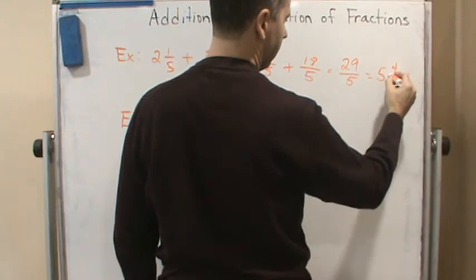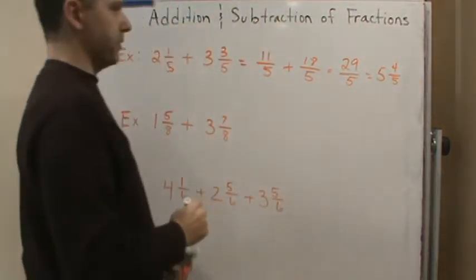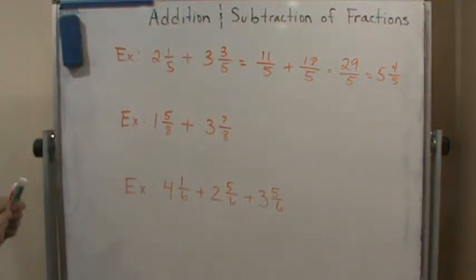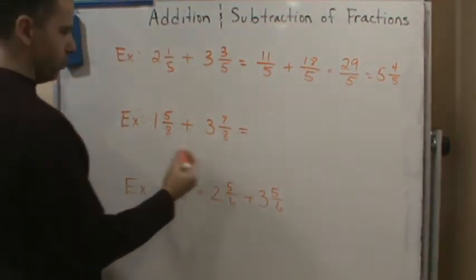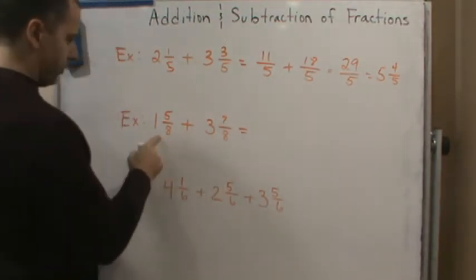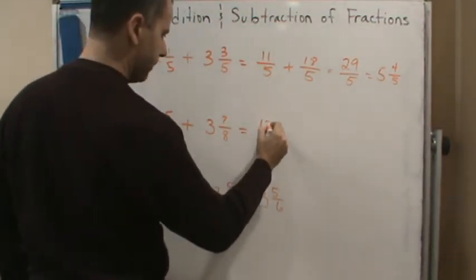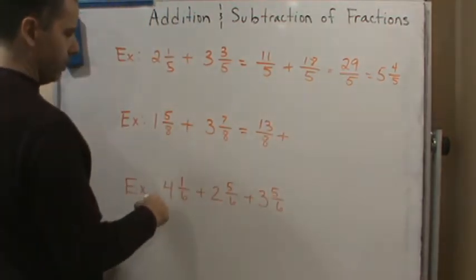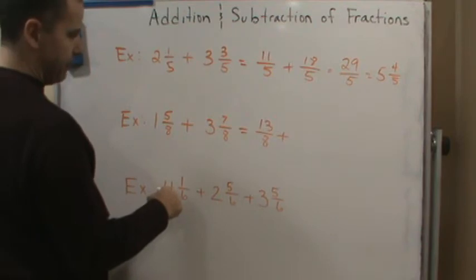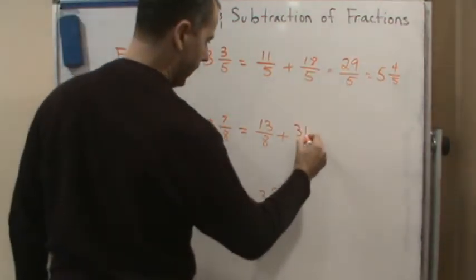What about the next one? Same thing, right. We change mixed numbers to improper fractions. So this is going to be 13/8 plus, 24 plus 7 is 31, so 31/8.